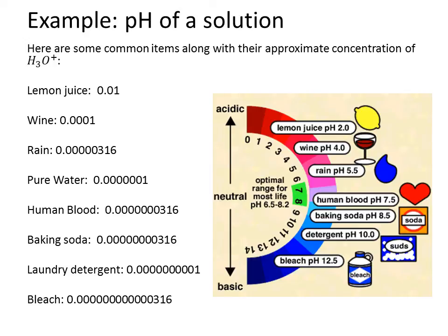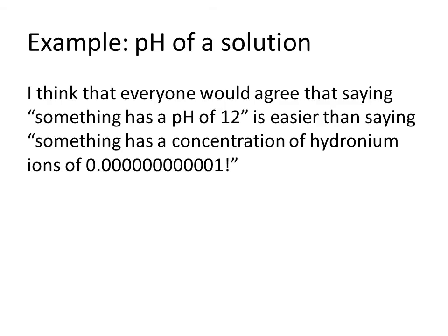Here are some examples of common items along with their approximate concentration of H₃O⁺. In lemon juice, the H₃O⁺ concentration is 0.01. In wine, it's 0.0001. In rain, it gets even smaller, and by the time you get to bleach, this is a very, very small number. Frankly, we simply don't want to have to write numbers like that. It's much easier to say that bleach has a pH of 12.5. I think everyone would agree that saying something has a pH of 12 is easier than saying it has a concentration of hydronium ions of 0.000000000000001.